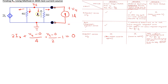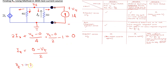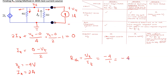Since the circuit has a dependent source, we must write the dependent source constraint equation and relate Ix to the node voltage. Ix is flowing through the 2 ohm resistor, so Ix equals 0 minus Vt divided by 2. We now have two equations and two unknowns, which can be solved to show that Vt is minus 4 volts. Therefore, R_Thevenin equals Vt over It, which is minus 4 over 1, giving minus 4 ohms.